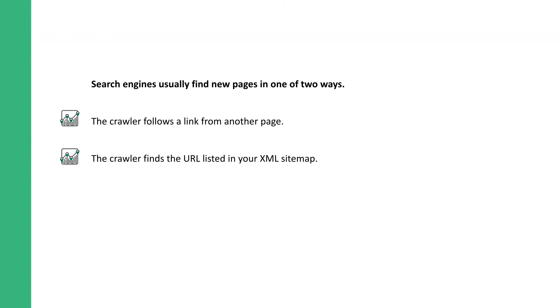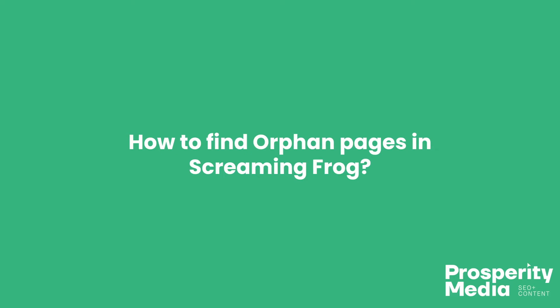Search engines usually find pages in two ways: the crawler follows a link from another page, or the crawler finds a URL listed in your XML sitemap.